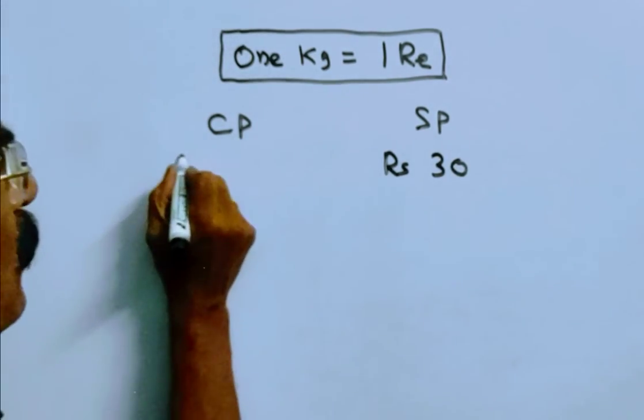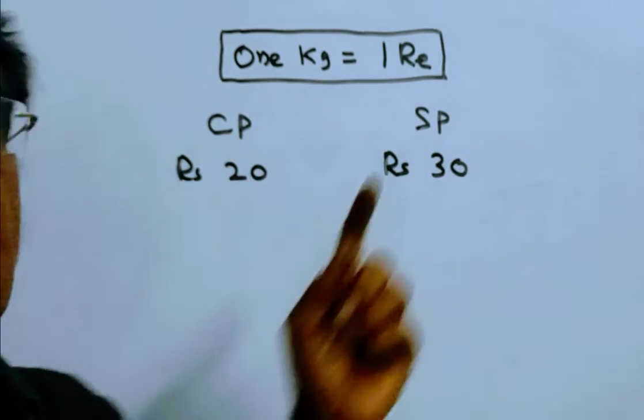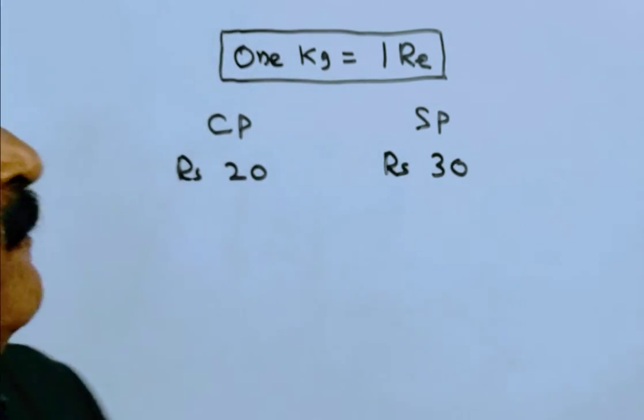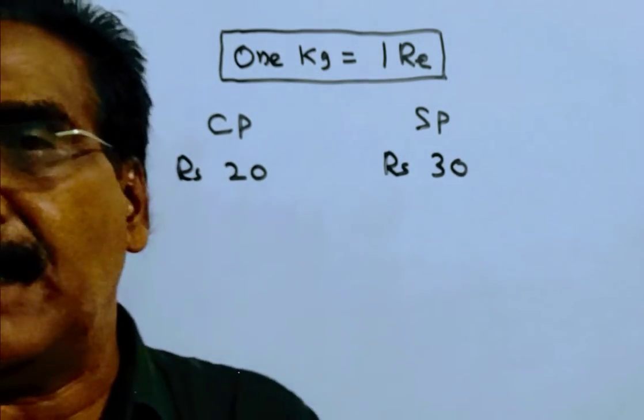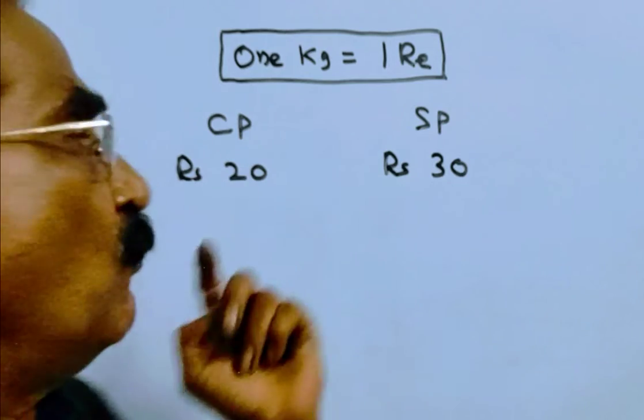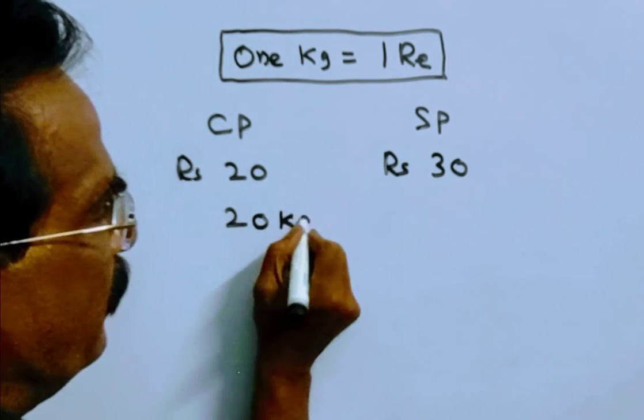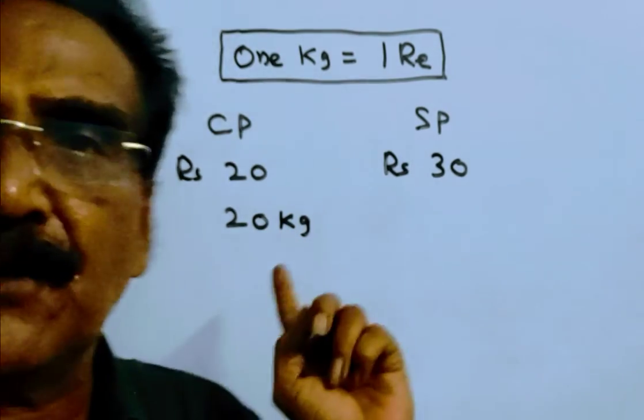So cost price is 20, selling price is 30. One kg mangoes equals one rupee. So 20 rupees means 20 kg. The shopkeeper has to give 20 kg for rupees 30.